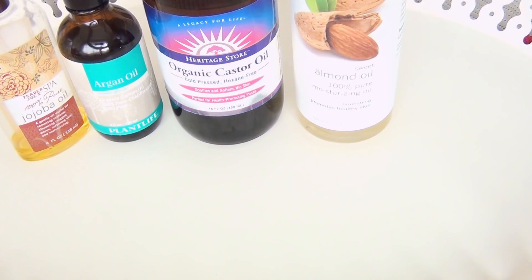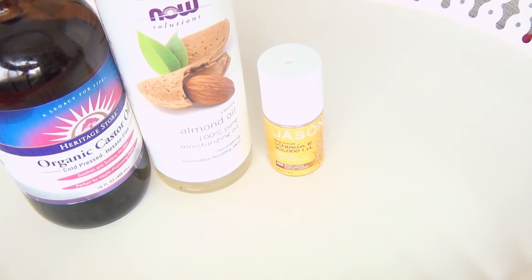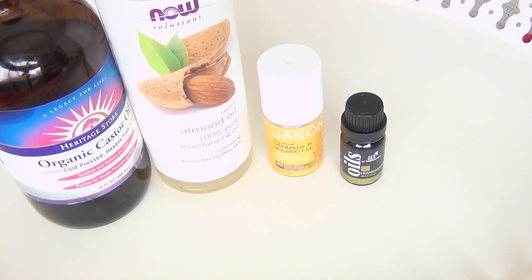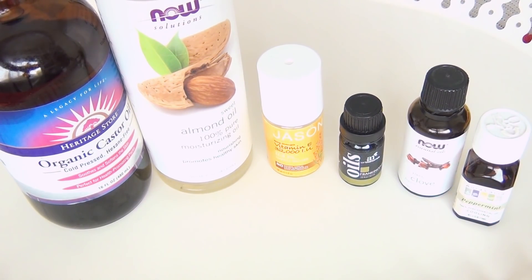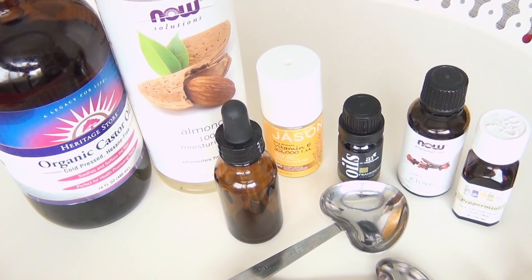For this recipe I'm using a castor oil and sweet almond oil, as well as a high quality vitamin E oil, frankincense essential oil for a nice fragrance, as well as clove and peppermint for stimulation, and a dark glass bottle. Dark glass because that's going to protect your oils and keep them from spoiling in the sunlight.